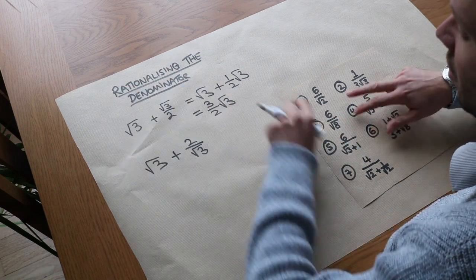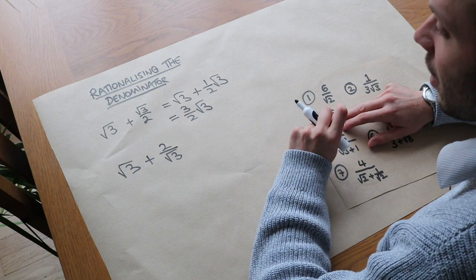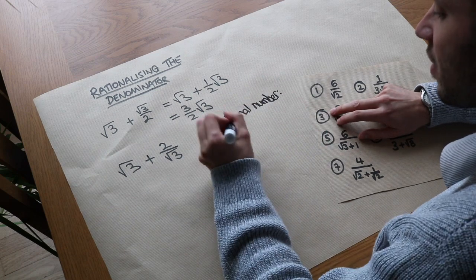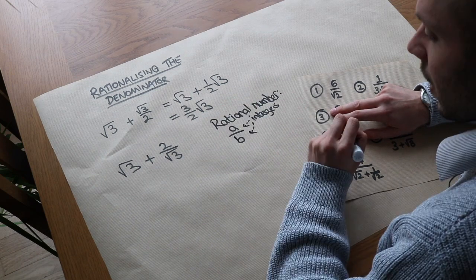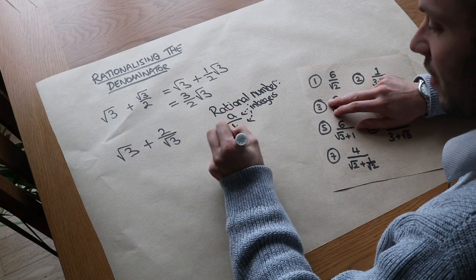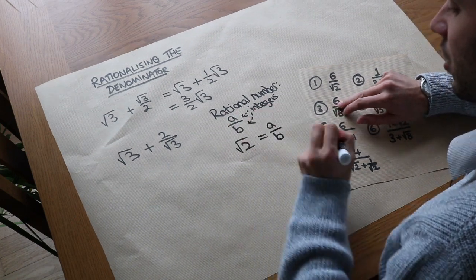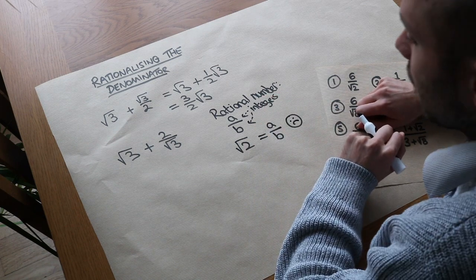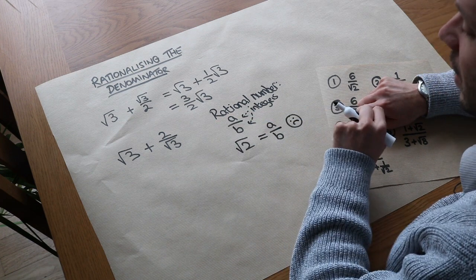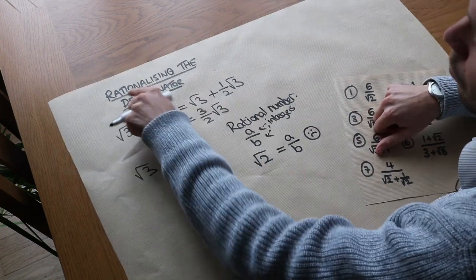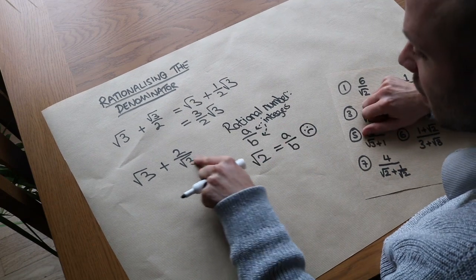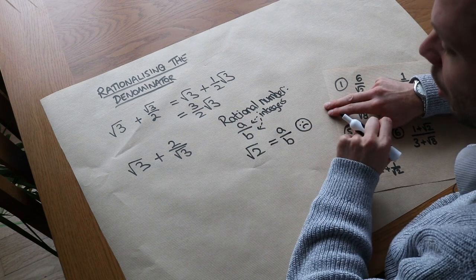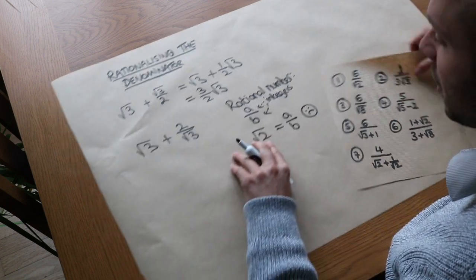The reason it's called rationalizing is because we don't consider surds to be rational. A rational number is one that can be expressed as a fraction involving integers. It's not possible to write root 2 as a fraction involving integers — there's a nice proof for that which we won't cover here. Surds are known as irrational because they're not rational, and to rationalize the denominator means to turn the denominator into something rational, i.e. either a fraction or a whole number which doesn't involve surds.